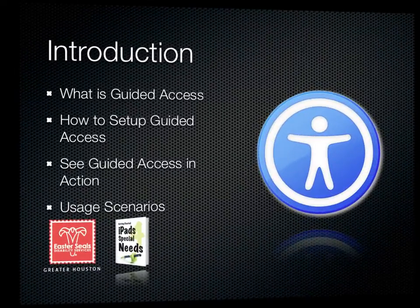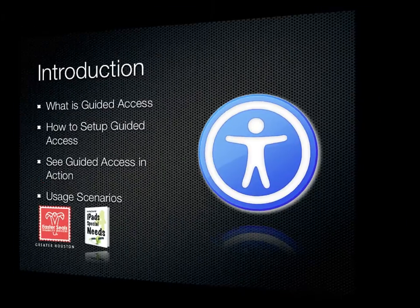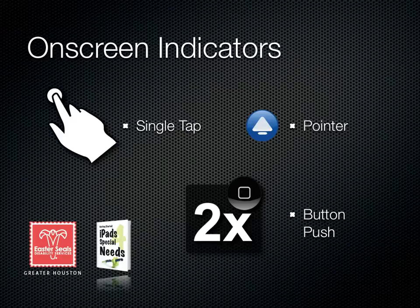In this video, we're going to define what Guided Access is and how to set it up. We're going to see it in action and go through a number of usage scenarios. We'll use three different types of visual indicators: a hand every time I tap, an icon every time I hit a button on the outside of the device, and arrows to help point out key information on screen.